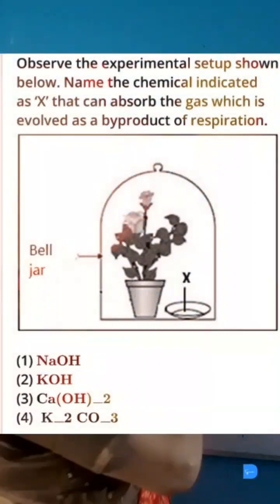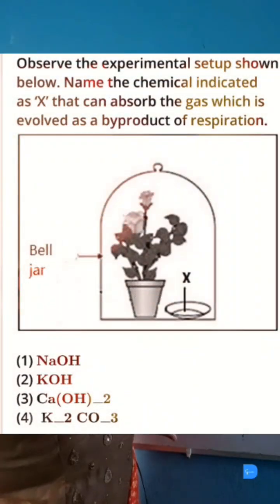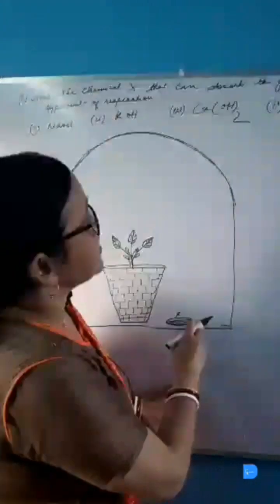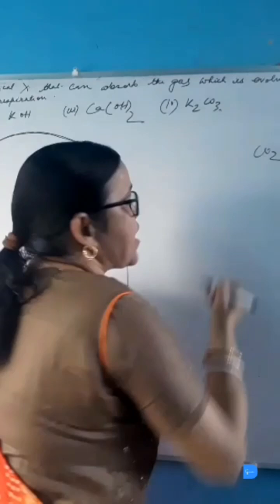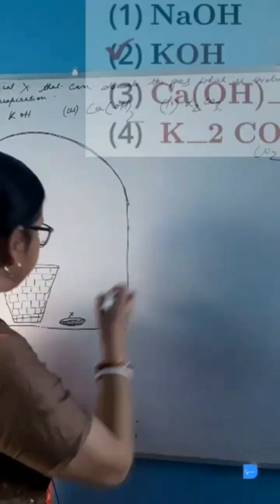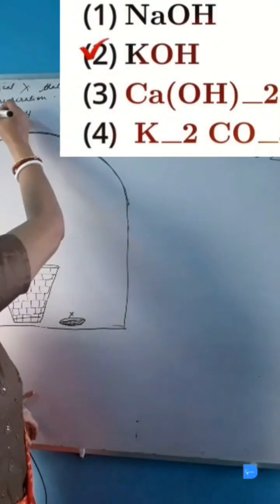Observe the experiment setup given here. Name the chemical X that can absorb the gas which is evolved as a byproduct of respiration. Carbon dioxide is given as a byproduct during respiration, and the substance X is potassium hydroxide.